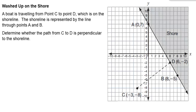This is the question. It says a boat is traveling from point C to point D, which is on the shoreline. So point D is on the shoreline. I guess the shore is the dark part and the unshaded is the water. So the boat is traveling along this path towards the shore.